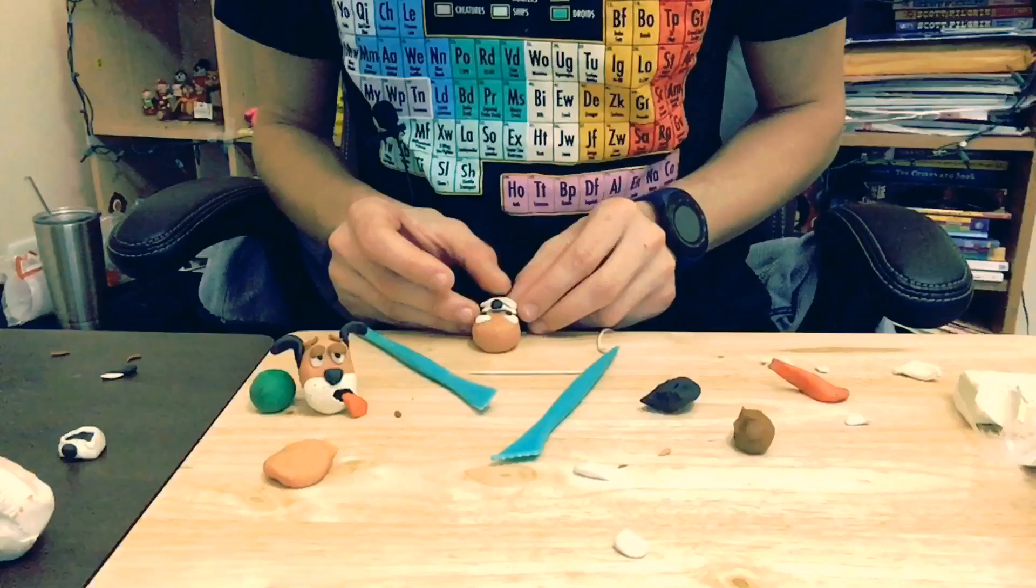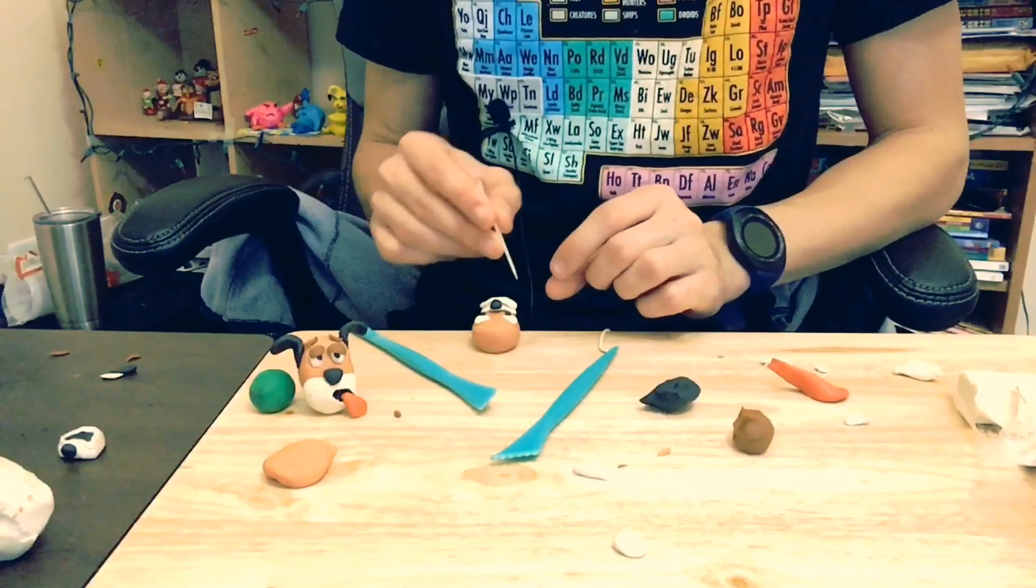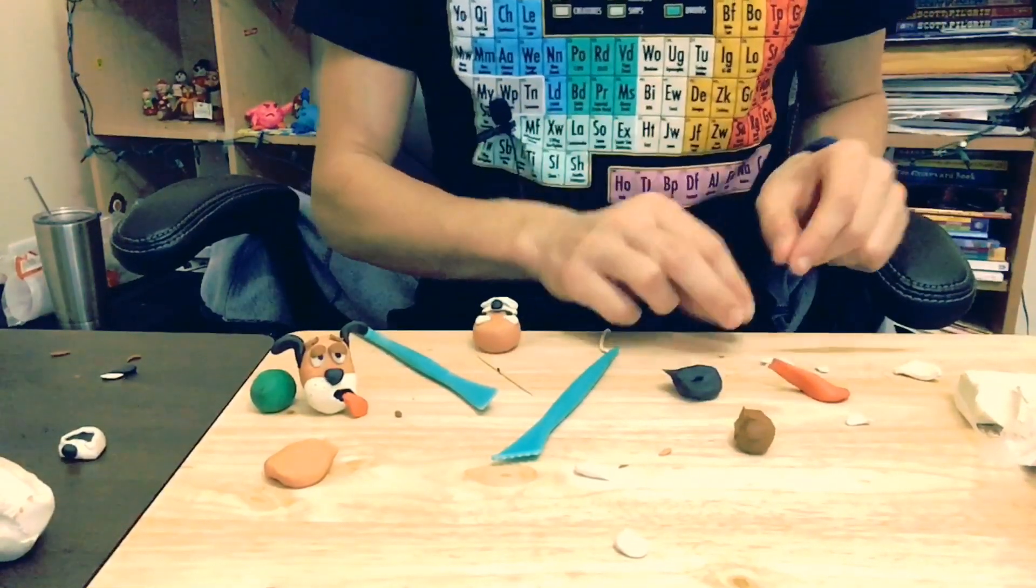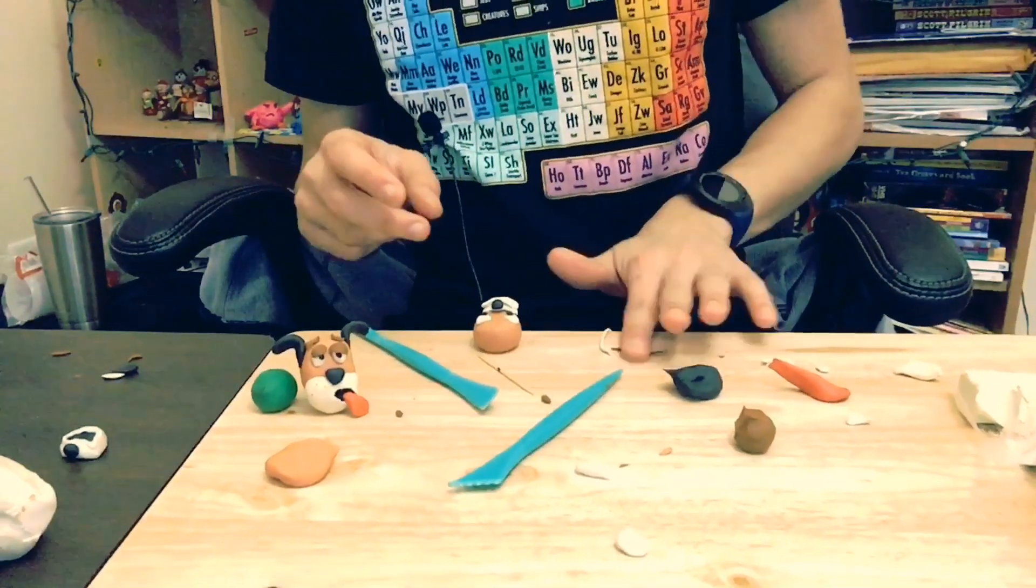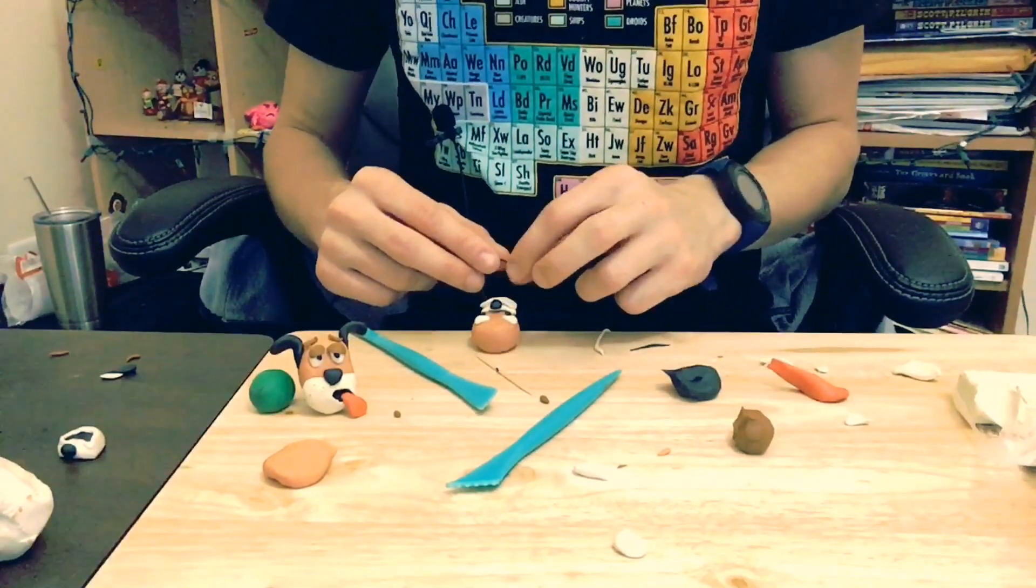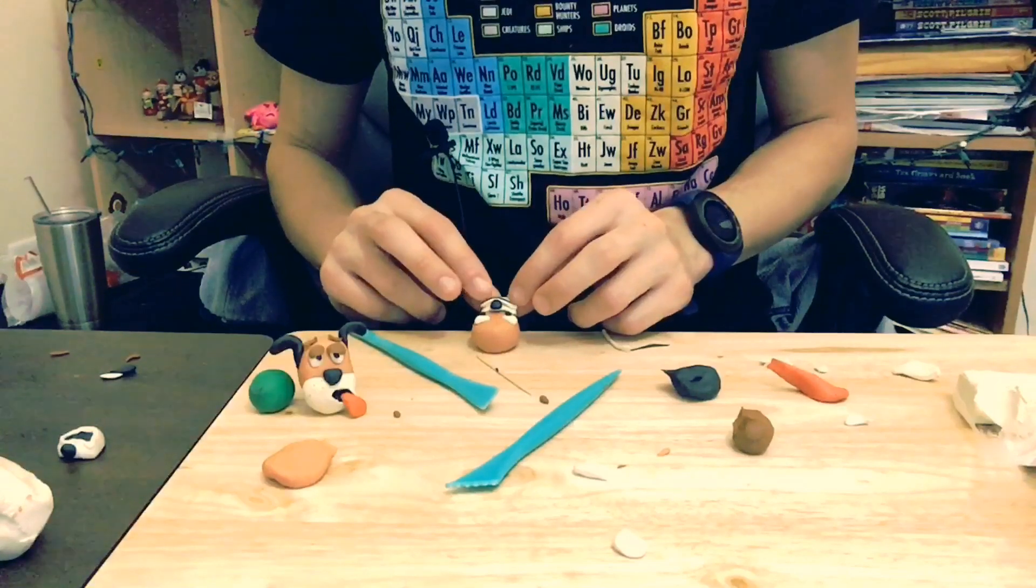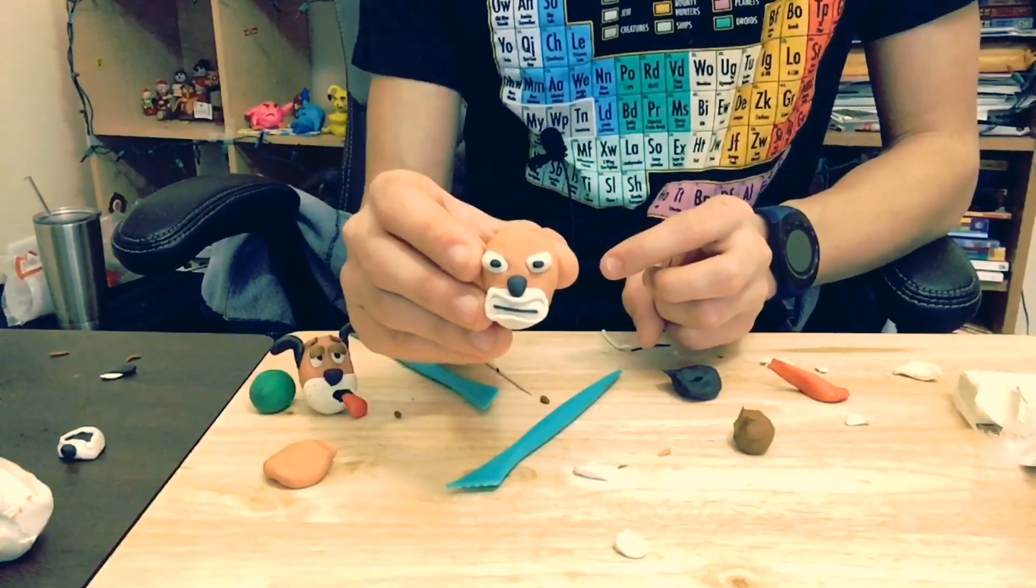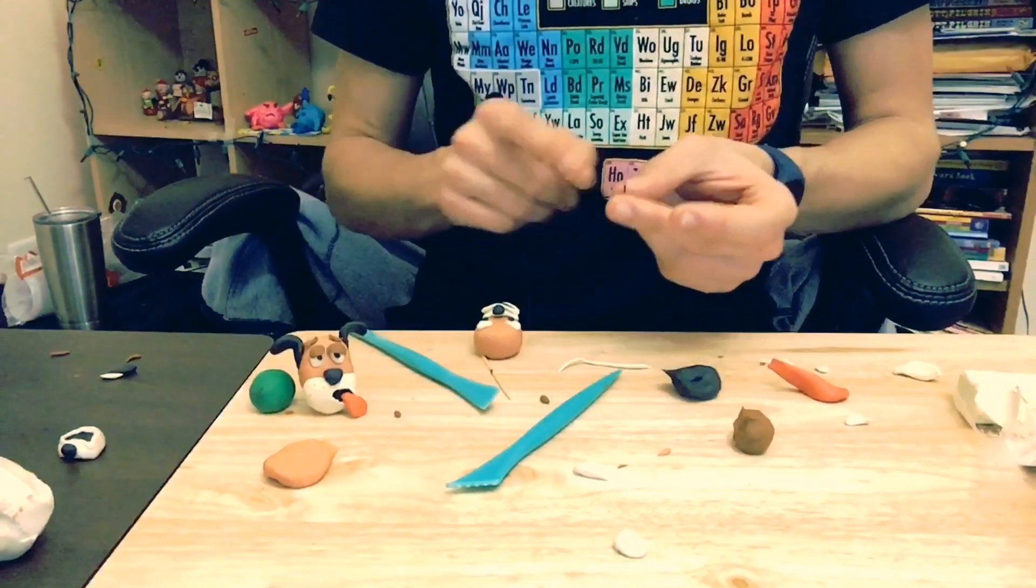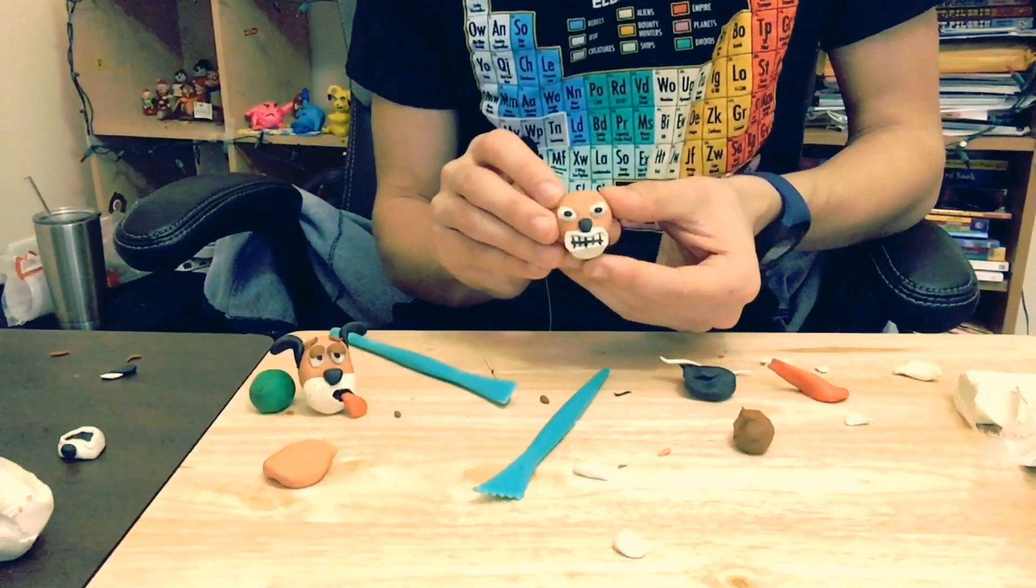Once you have that onto the peanut shaped teeth, you can do one of two things. You can either take a toothpick or you can draw in the lines for his teeth and do it that way. Or you can take black clay, which is how I recommend it. Thin that out and apply it right on top there. It looks like that. Now I'm going to add little lines going across his mouth so it looks like he has a full set of teeth. So there you have his teeth.